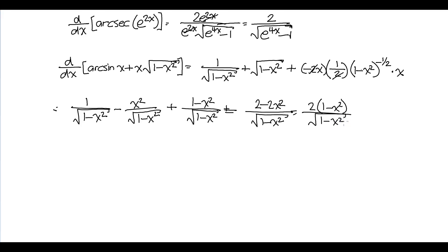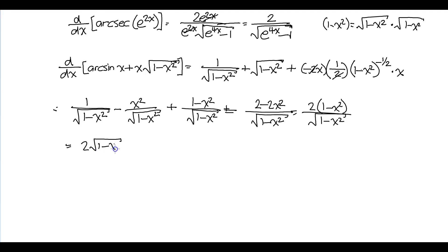You should also realize that you can rationalize the denominator. If you notice that 1 minus x squared equals the square root of 1 minus x squared times the square root of 1 minus x squared, that gets you 2 times the square root of 1 minus x squared. And we're done — we just found out that the derivative of arc sine of x times x times the square root of 1 minus x squared is the much simpler expression 2 times the square root of 1 minus x squared.